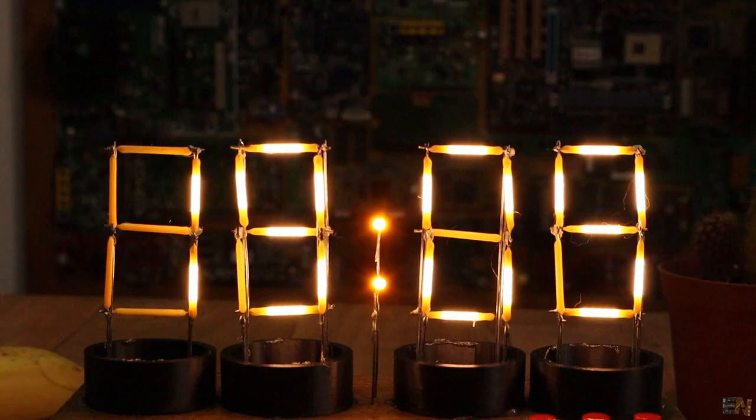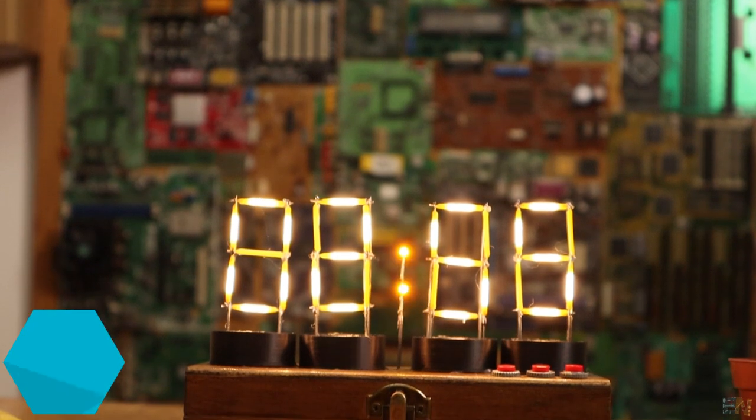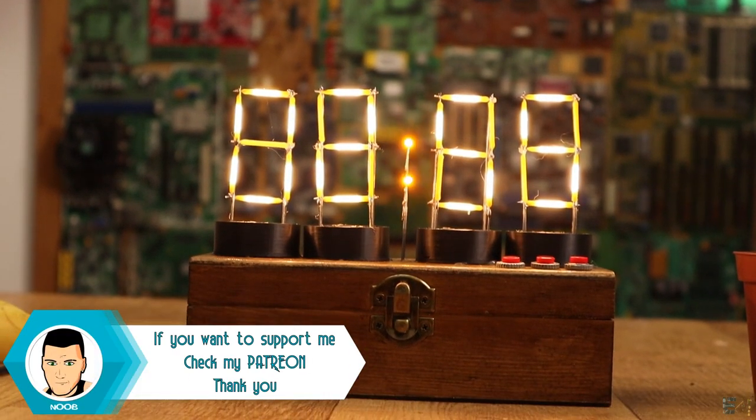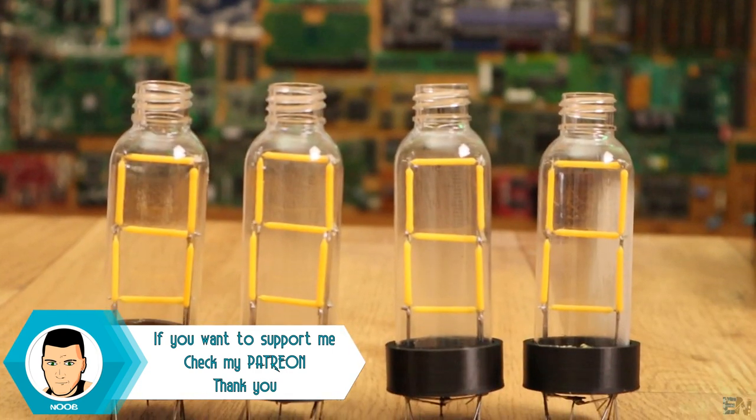Also, one other bad thing is that the light of these LEDs is not filling the entire filament. Only the middle part of the segment is 100% light and that makes the number to be difficult to read. But I think that when I paint the tubes, the light will be a lot better.